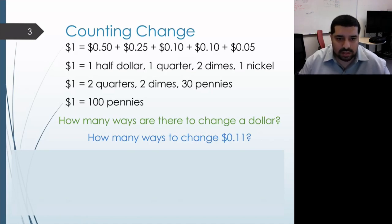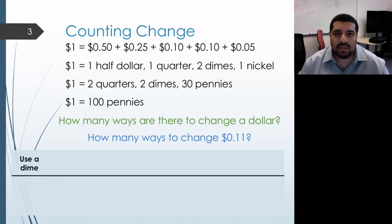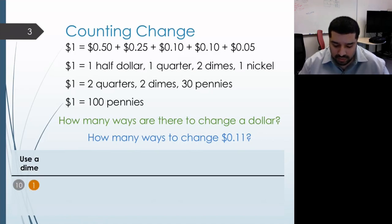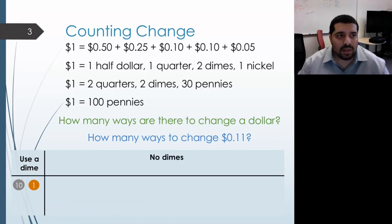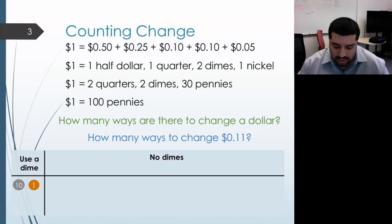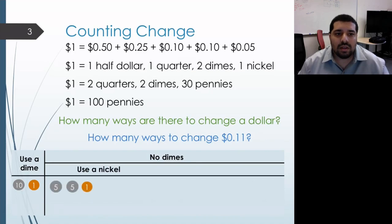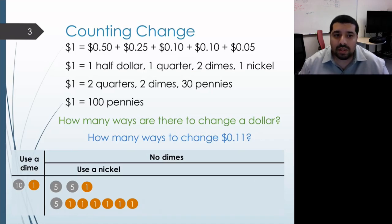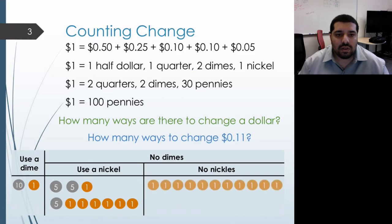We can make a decision as to whether or not to use a dime. We figure out how many ways we can make change for 11 cents using a dime, and then how many ways there are to do it without using a dime. If we use a dime, there's actually only one way to make 11 cents with that, which is a dime plus a penny. If we decide not to use dimes, we're left with just nickels and pennies, and we go through the same process of deciding whether or not to use a nickel. If we use a nickel, there are two ways: either two nickels and a penny, or a nickel and six pennies. If we decide not to use a nickel and we're also not using dimes, there's only one way to make 11 cents, which is to use all 11 pennies.